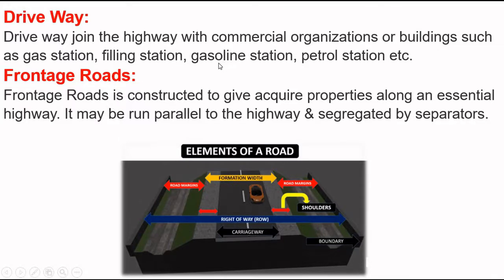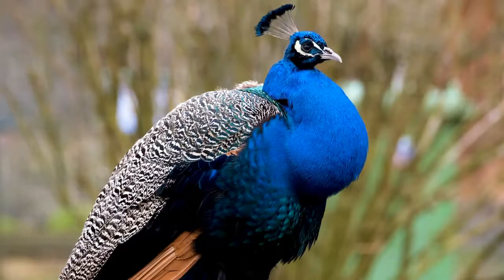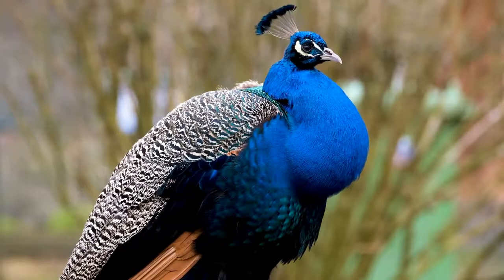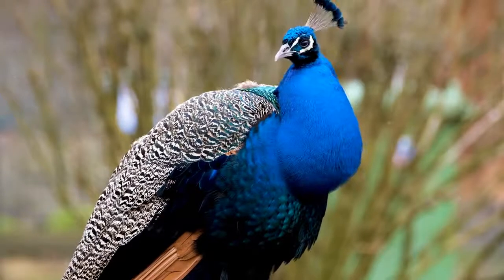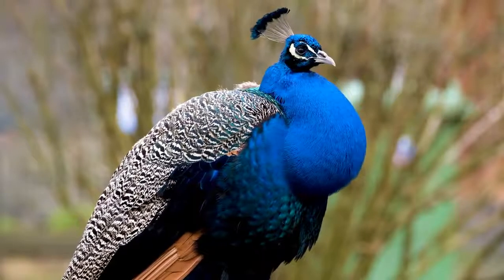The next component is frontage roads. A frontage road is constructed to give access to properties along an expressway or highway. It can run parallel to the highway and is separated by separators. Thanks for watching our video. See you in the next video. Until then, take care of yourself. Allah Hafiz.